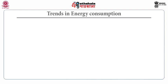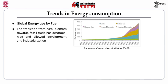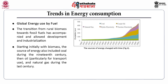Let's see the trends in energy consumption, especially global energy use per fuel. The sources of energy have changed with time. The transition from rural biomass towards fossil fuels has accompanied and allowed development and industrialization. Starting initially with biomass, the source of energy also included coal during the 19th century, then oil particularly for transportation, and natural gas during the last century.